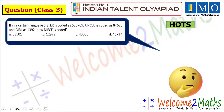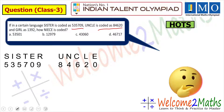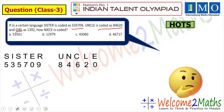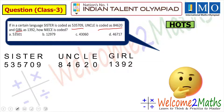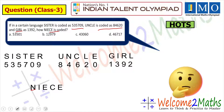Let's read this question. If in a certain language, 'sister' is coded as 5 3 5 7 0, 'uncle' is coded as 8 4 6 2 0, and 'girl' is coded as 1 3 9 2, then we have to find out how 'niece' is coded. Let's find out. The first letter is N.